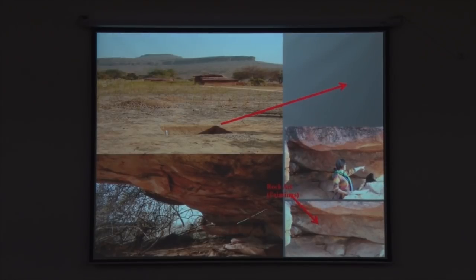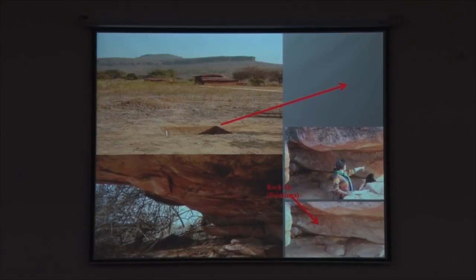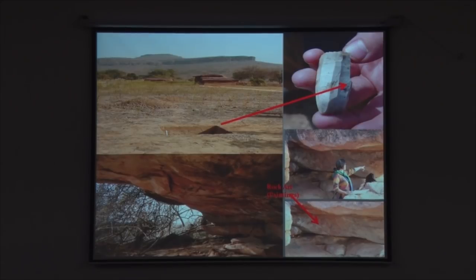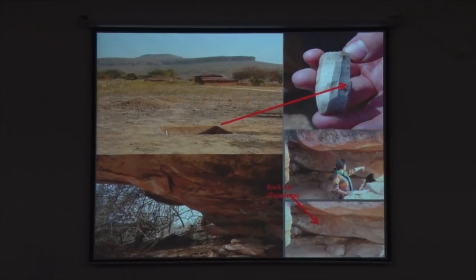One such rock shelter has clearly visible red paintings suspected to be Mesolithic in age, because the cave floor typically has a scatter of Mesolithic period microliths. But some excavations have provided clues that these microliths go back further in time. Prismatic fluted cores from which long slender microlithic blades were detached have been found in low-energy sediments in more or less primary context — not removed from their original place of discard.